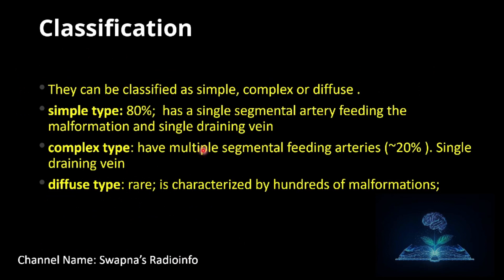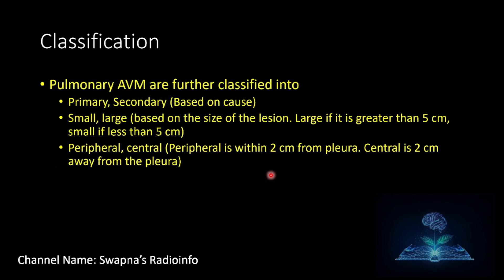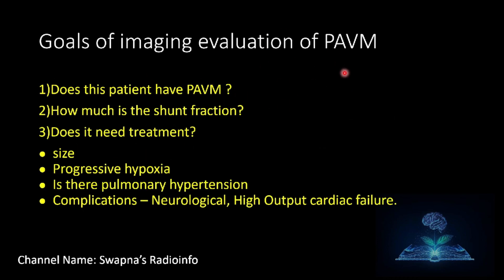Classification: pulmonary AVMs can be classified as simple, complex, and diffuse. Simple type, seen in 80% of cases, has a single segmental feeding artery and a single draining vein. Complex type has multiple segmental feeding arteries and a single draining vein. Diffuse type is rare, characterized by hundreds of malformations. They are further classified as primary or secondary based on cause; small or large based on size — large if greater than 5 cm, small if less than 5 cm; and peripheral or central based on location from the pleura — peripheral if within 2 cm from the pleura, central if more than 2 cm away.